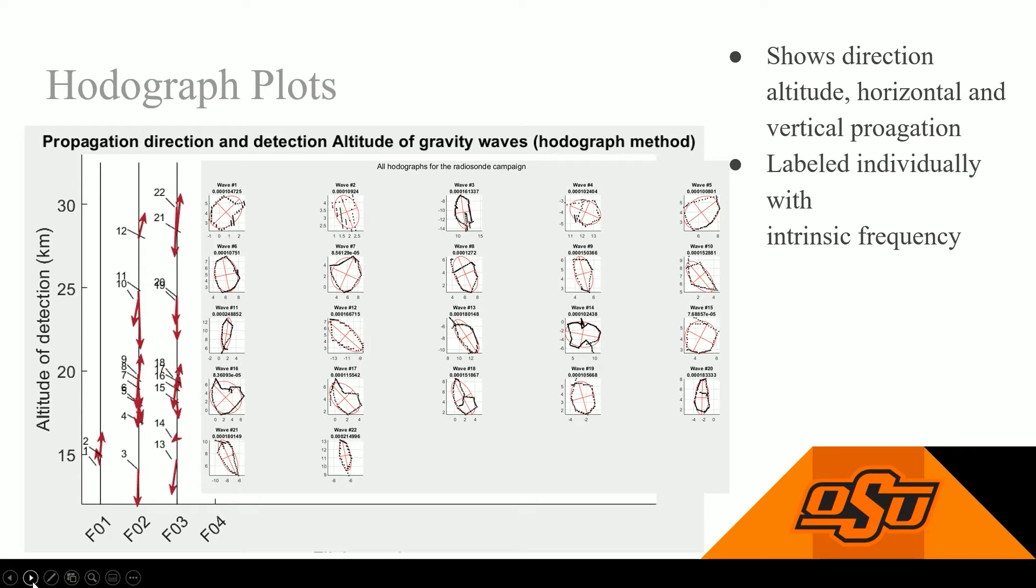Another thing we can get is the intrinsic frequency, which is denoted by the length of the arrows on the left, as well as that second line in the table.